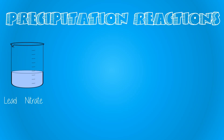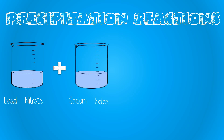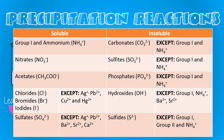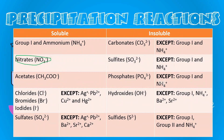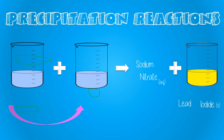Let's look at a particular precipitation reaction. If we had a solution of lead nitrate reacting with a solution of sodium iodide, we can predict the products by swapping over the metal cations. The products would be sodium nitrate — which the solubility table shows is always soluble, so we write 'aq' next to it — and lead iodide. Iodides are generally soluble, however since lead is present, it would be insoluble, so we write 's' next to it to show a precipitate has been made.